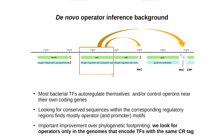A typical picture of transcriptional regulator targets is exemplified by the NTRC genomic locus. This transcription factor auto-regulates its own gene and one gene GLNA located nearby. Looking for conserved patterns within the corresponding regulatory regions gives mostly operator and promoter motifs, which could be further discriminated by operator width. This approach gives improvement over phylogenetic footprinting, because we look for operators only in genomes that encode transcription factors with the same CR tag.